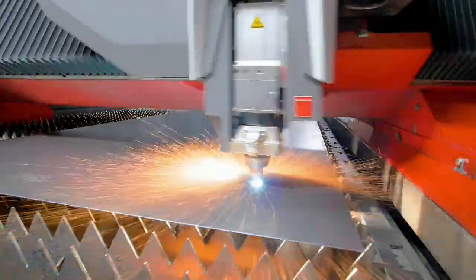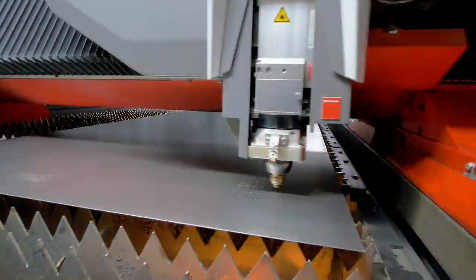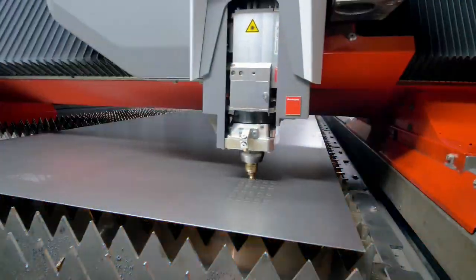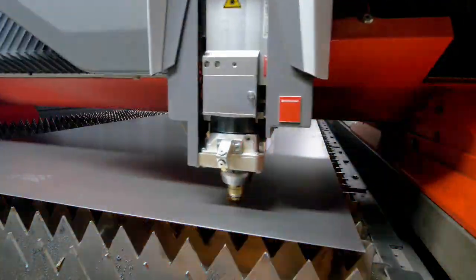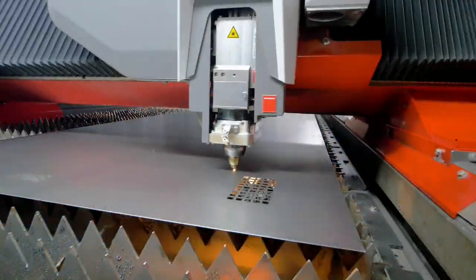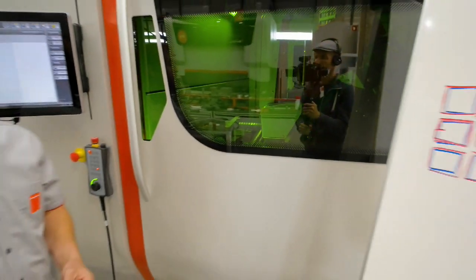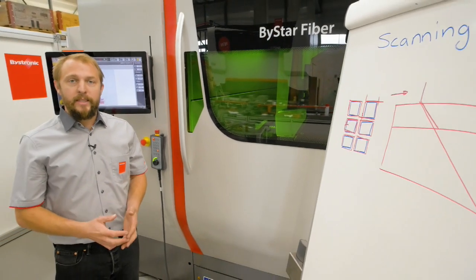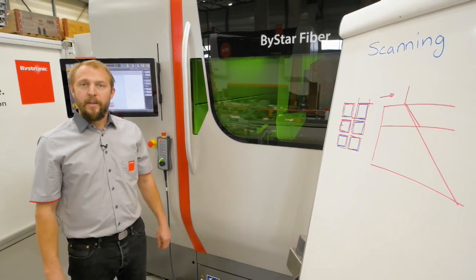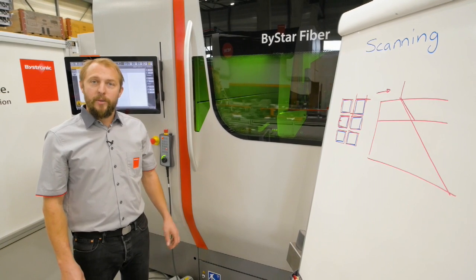So first we are doing the vertical lines. Then we are going to go on the horizontal lines. As you can see, now all the parts fell out without producing any collision, having a stable and safe process. Thanks for watching and have a good day!